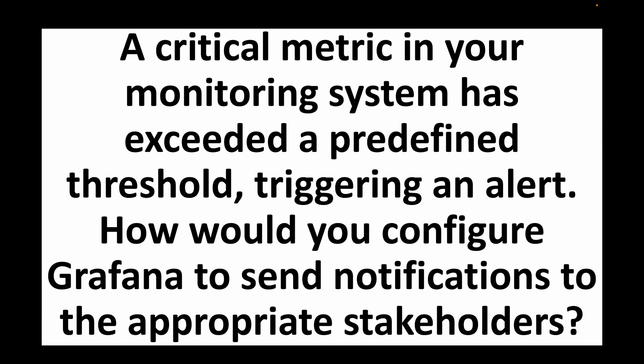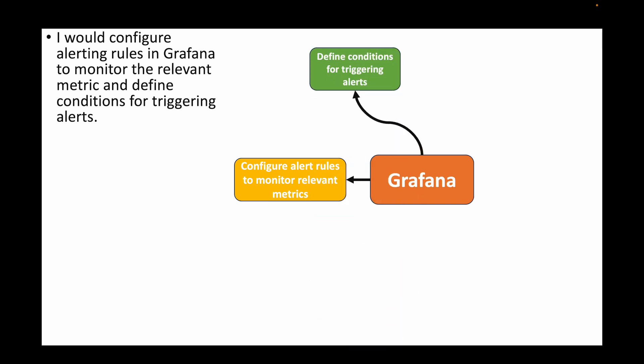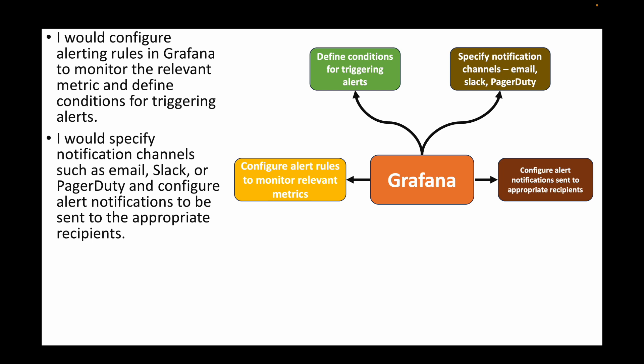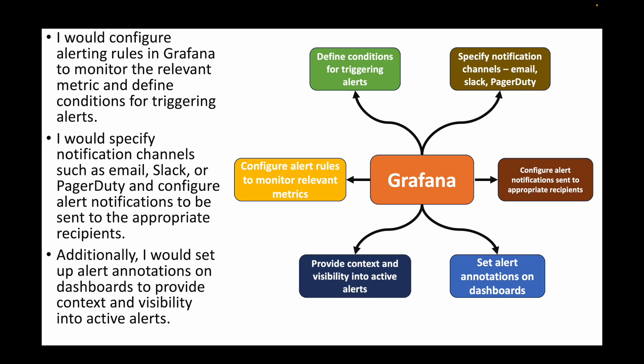The next question: a critical metric has exceeded a predefined threshold triggering an alert — how would you configure Grafana to send notifications to the appropriate stakeholders? We can implement alerting rules in Grafana to monitor relevant metrics such as CPU or RAM, define conditions for when alerts should trigger (for example, CPU utilization at 90%), specify notification channels such as email, Slack, or PagerDuty, and configure alert annotations on the dashboards to provide context and visibility into active alerts.